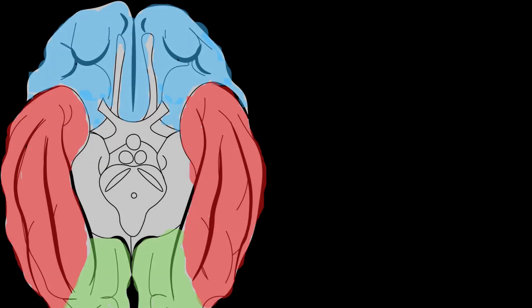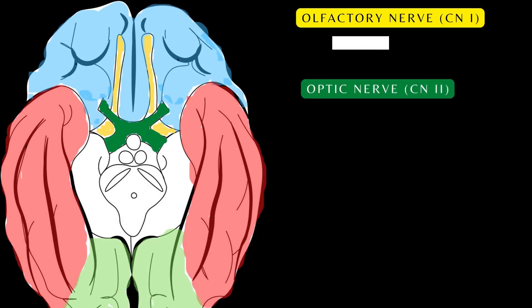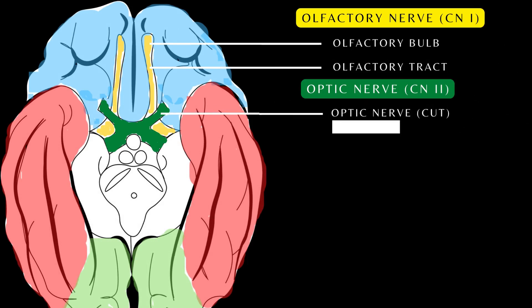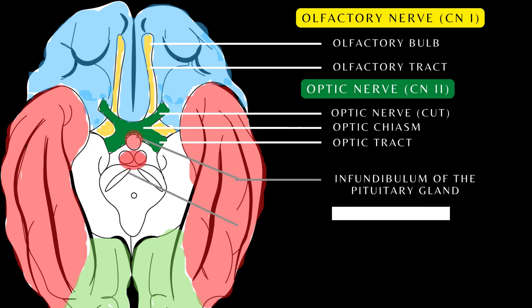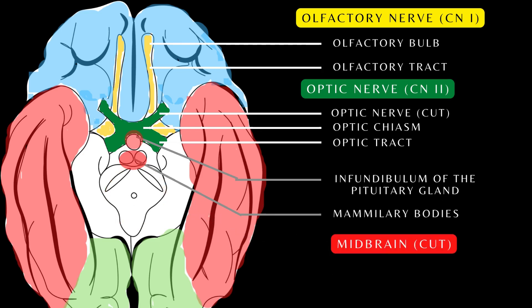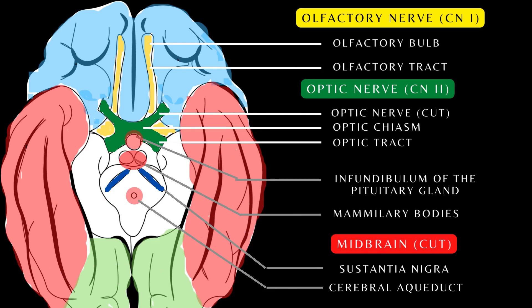The central aspect of the inferior view of the cerebrum features a number of important structures. It is home to two of the 12 cranial nerves: the first cranial nerve, the olfactory nerve, and the second cranial nerve, the optic nerve. The olfactory bulb and the olfactory tract originate from the cerebrum. Here is the optic nerve, the optic chiasm, and the optic tract. Emerging from the inferior temporal region posteriorly are the infundibulum of the pituitary gland and mammillary bodies. Here is a section of the midbrain showing the substantia nigra and the cerebral aqueduct.